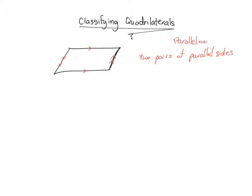There are more properties of a parallelogram, but this is the main property that we need to understand. Now that we know what a parallelogram is, we're going to use that in a couple of our definitions. The next figure I'm going to draw is a rhombus.